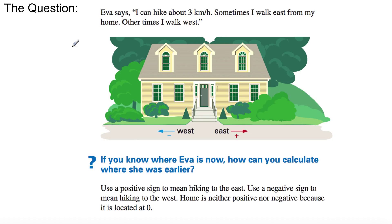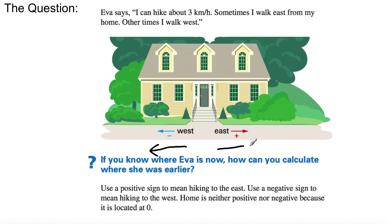Eva says she can hike about 3 kilometers an hour. Sometimes she walks east from home, other times she walks west. Remember, if we are going left on the number line, it is going to be negative — subtraction, negative number, going left. If we're going to the right or adding, it is going to be positive. So positive is right, negative is left on your number line.